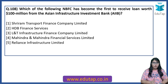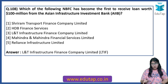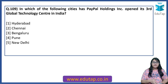Which of the following NBFCs has become the first to receive a loan worth $100 million from the Asian Infrastructure Investment Bank (AIIB)? You can also mention the headquarters of AIIB in the comment section — it is usually confused with other banks like ADB and NDB. The answer is L&T Infrastructure Finance Company Limited (LTIF).